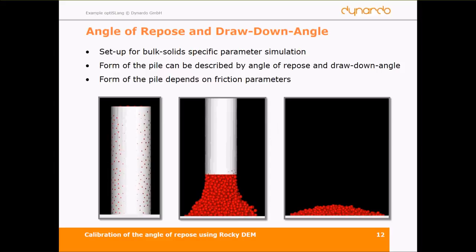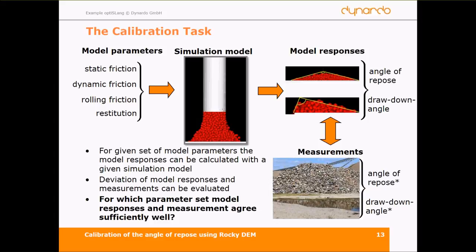Now the calibration task. We have decided to show a little example of the angle of repose and drawdown angle. Both angles are quite well-suited and depend on the friction parameters already shown. We have our model parameters — static friction, dynamic friction, rolling friction — which influence the simulation model. We want to find the parameter set that matches the angle of repose and drawdown angle we measured.